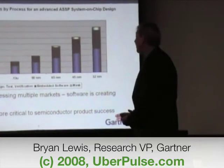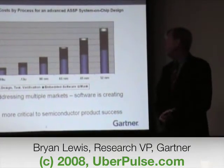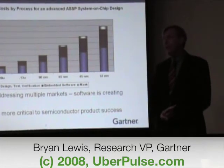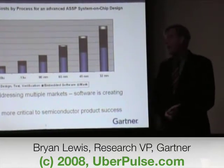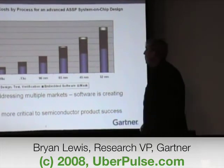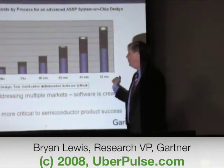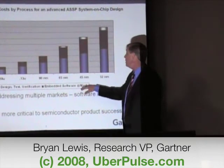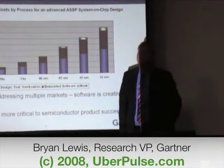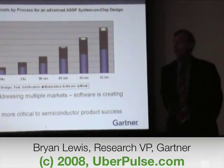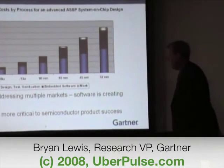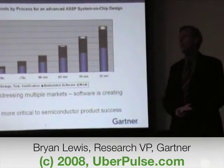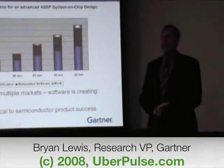At the same time, design costs continue to rise. Looking at the average ASSP — application-specific standard product — what's a typical design cost as we move from 90 to 65 to 45 to 32 nanometers? An important point is that people focus on the mask charges a lot, and that's a piece of the equation, but really it's the verification, it's the engineering time — that's a big chunk — as well as the embedded software. Embedded software is playing a huge role going forward and is a key part of the design cost.